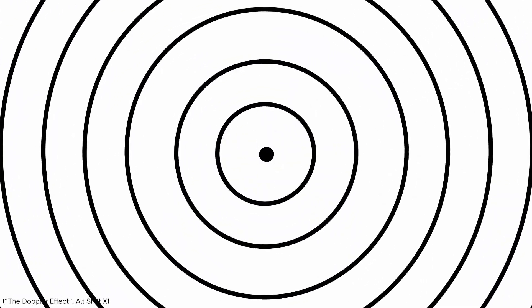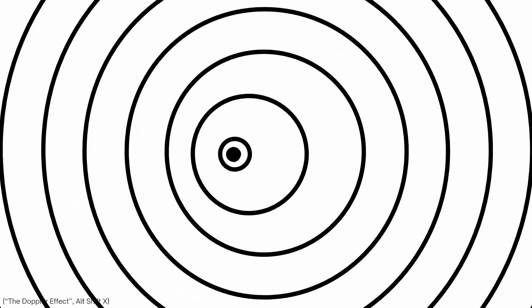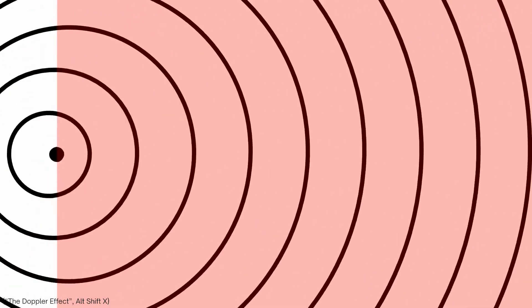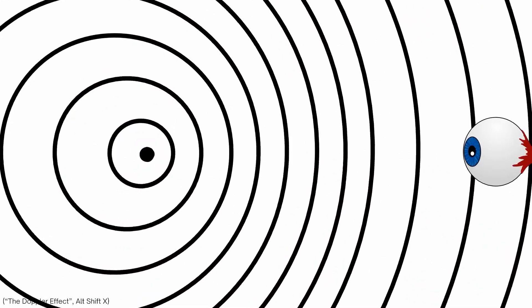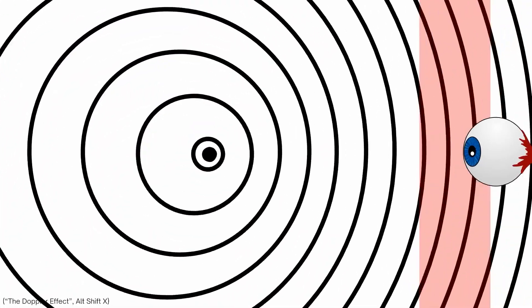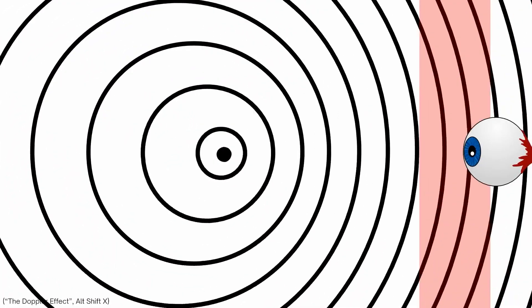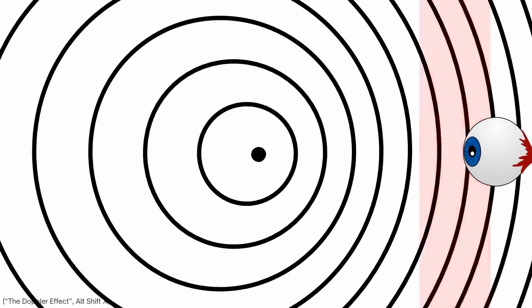So first of all, what is the Doppler effect? The Doppler effect is a phenomenon that occurs when there is a relative motion between a source of sound and an observer. It describes the perceived change in frequency of a sound wave due to this motion. When a source of sound is moving towards an observer, the sound waves emitted by the source get compressed or squeezed together in the direction of motion, resulting in an increase in frequency and a higher perceived pitch.